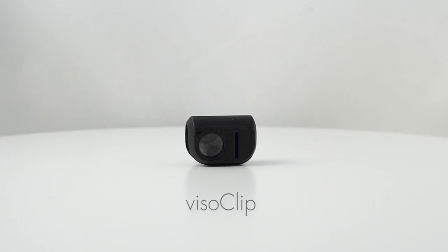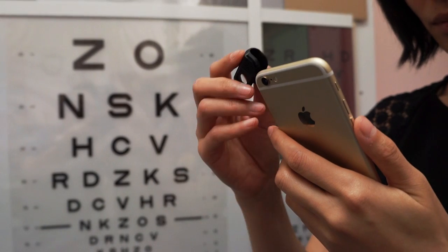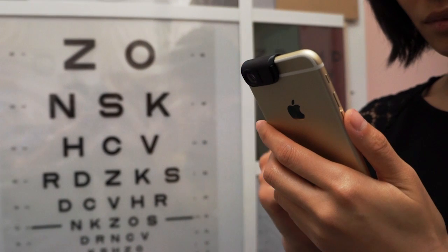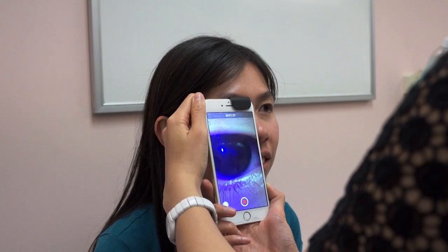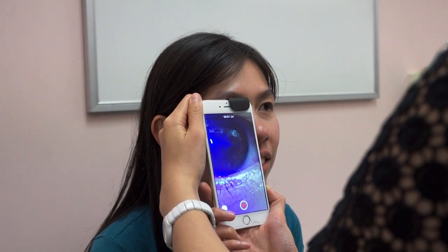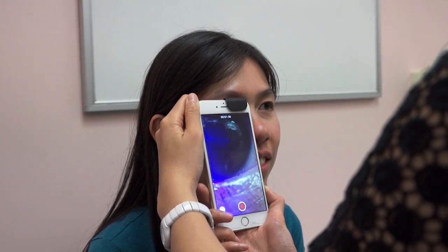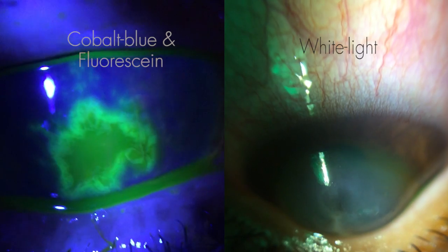The Visoclip completely changes the way we examine the front of the eye. It's simple and easy to use with minimal training. Amazingly this ultra compact device is capable of up to 10 times optical magnification. This makes it a real alternative for those without a slit lamp microscope.